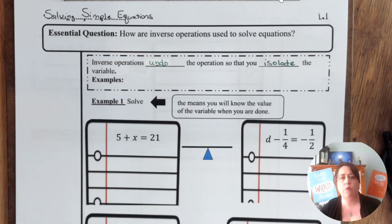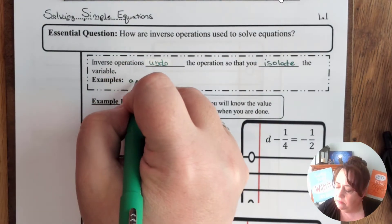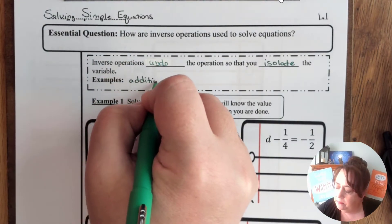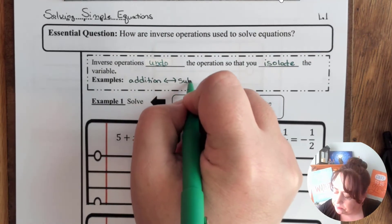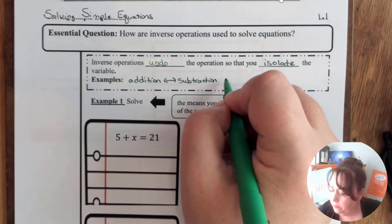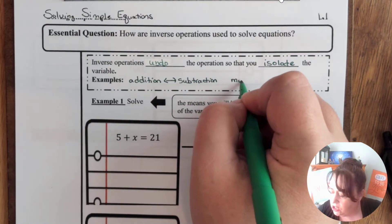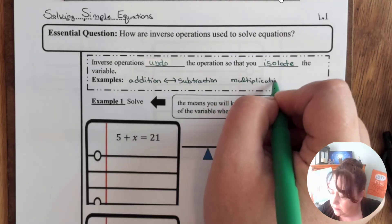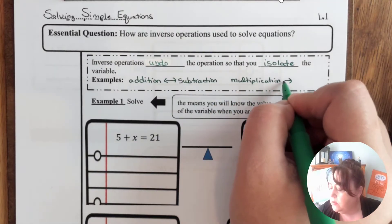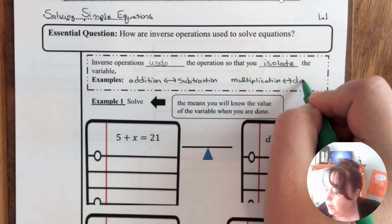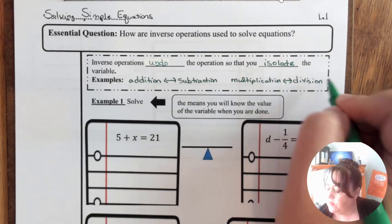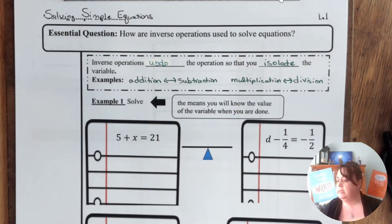So some examples of what we're talking about when we are talking about operations, we mean that addition is undone by subtraction and multiplication. Go ahead and pause the video as you fill that one in. What is multiplication undone by? It is undone by division. Very good. So we're going to get right into this.